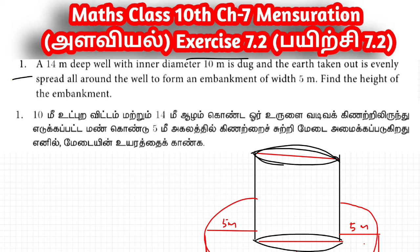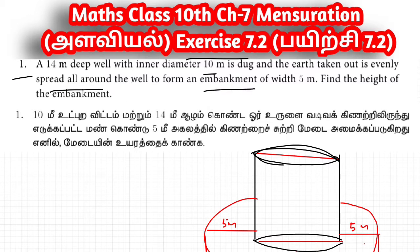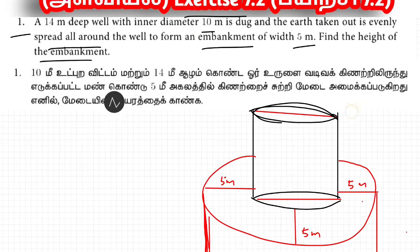A 14 meter deep well with inner diameter 10 meter is dug and the earth taken out is evenly spread all around the well to form an embankment of width 5 meter. Find the height of the embankment.